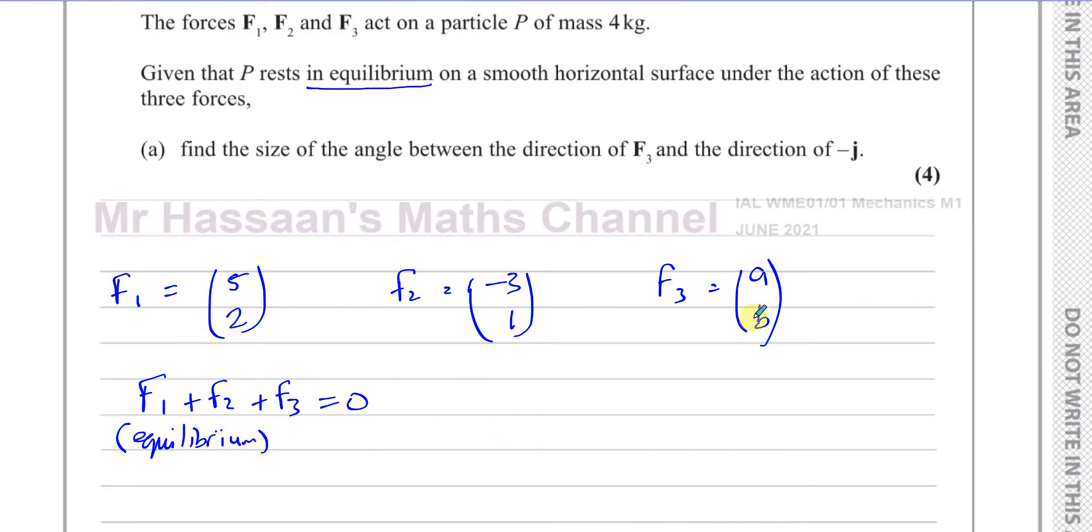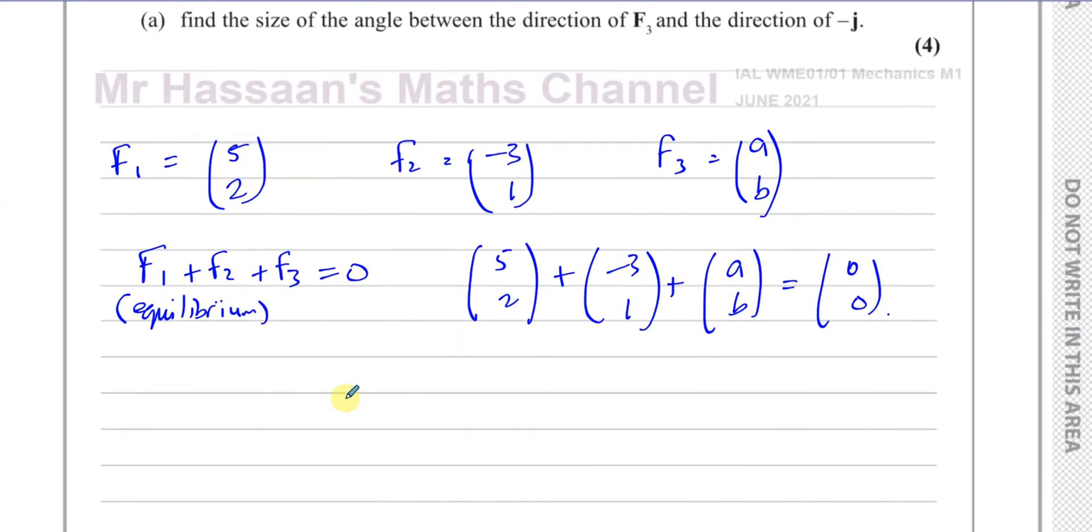So F1 would be (5, 2) and F2 would be (-3, 1) and F3 would be (a, b). If I add them together, we know that F1 plus F2 plus F3 equals zero because they are in equilibrium. So I have (5, 2) plus (-3, 1) plus (a, b) equals (0, 0). So I can make two equations: 5 minus 3 plus a equals zero, and 2 plus 1 plus b equals zero. So a is equal to negative 2 and b is equal to negative 3.